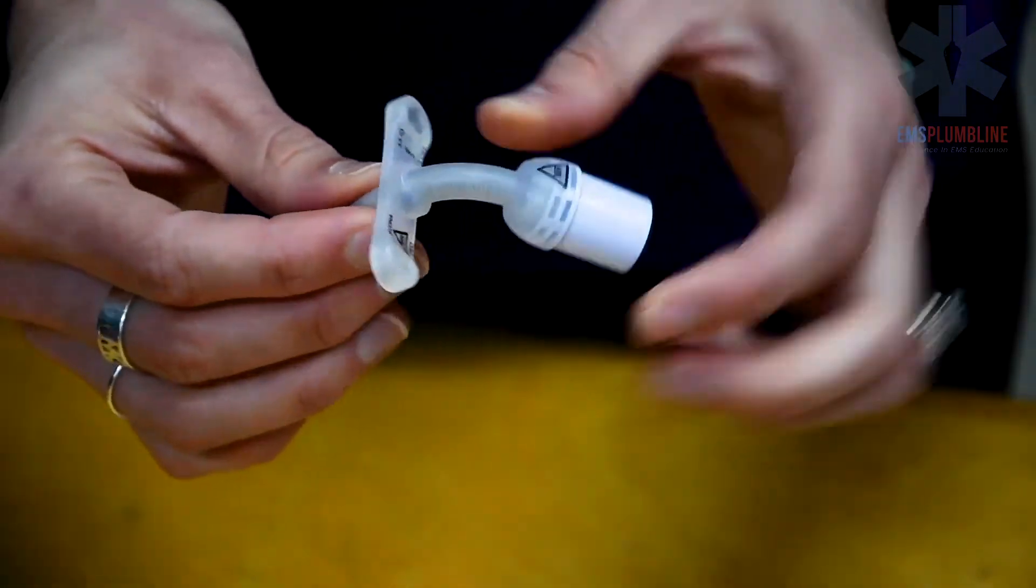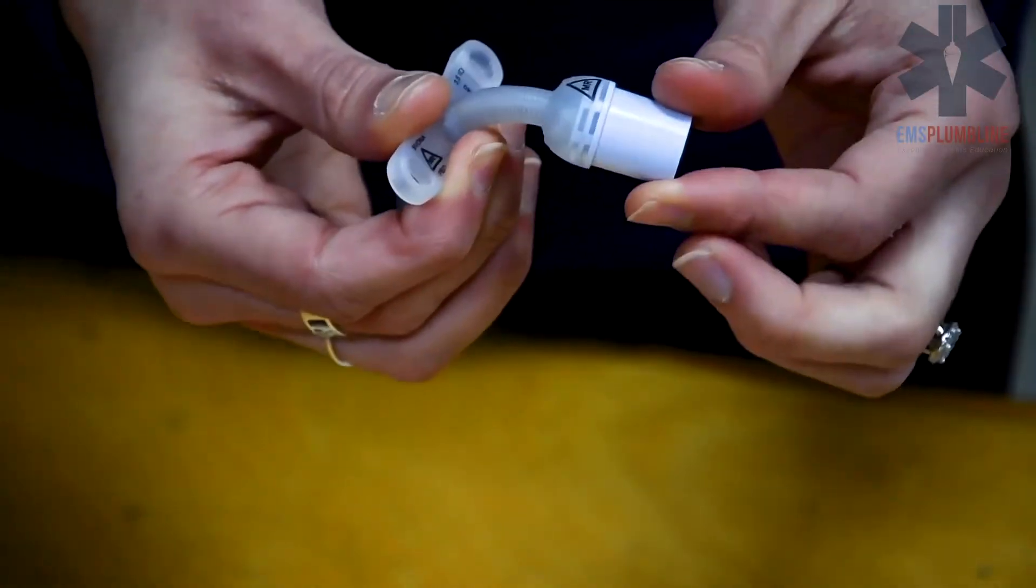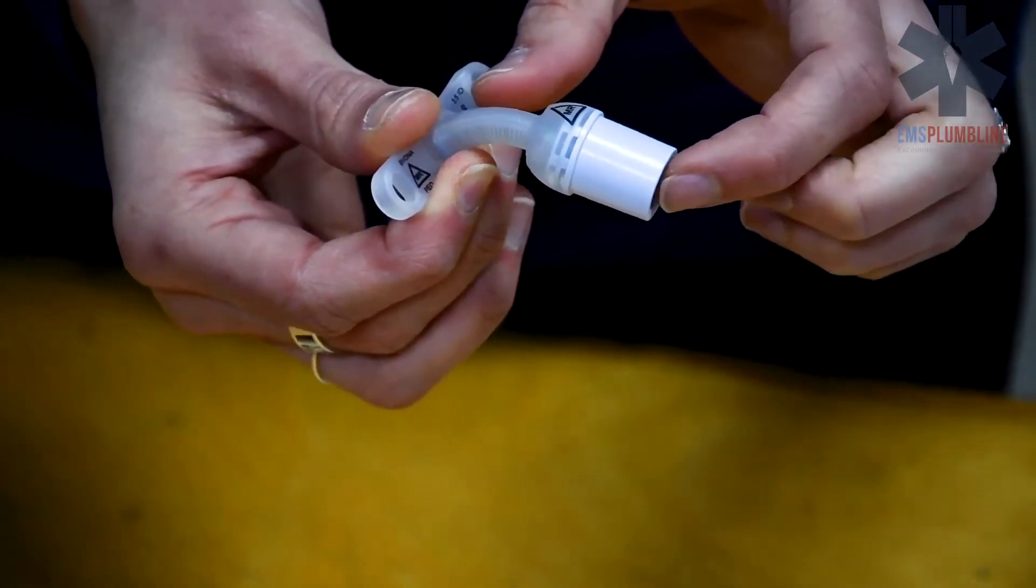This is a Bivona FlexTen tracheostomy tube. It has a flexible proximal extension that extends out of the neck for easy access.